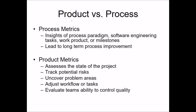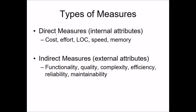Process metrics provide insight into the software engineering paradigm — tasks, work products, and metrics. We use them to assess the state of the project, track potential risks, uncover problem areas, adjust workflow or tasks, and evaluate the team's ability to control quality. Direct measures apply to internal attributes such as cost, effort, lines of code, speed, and memory. Indirect measures apply to external attributes such as functionality, quality, complexity, efficiency, reliability, and maintainability.